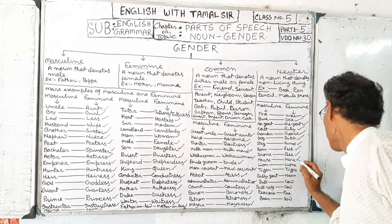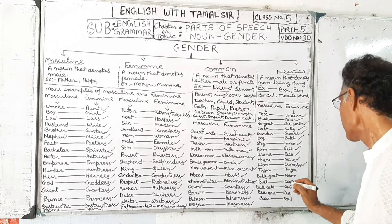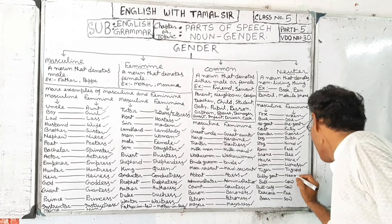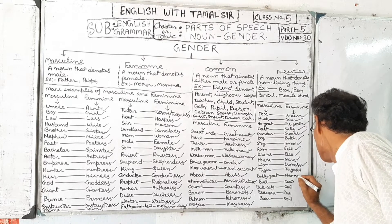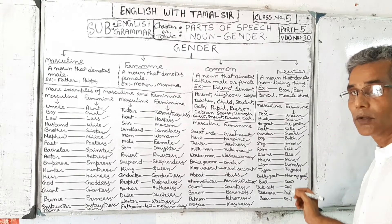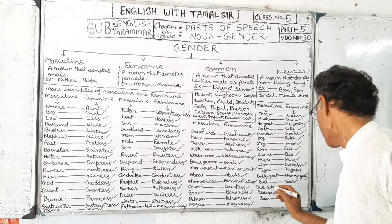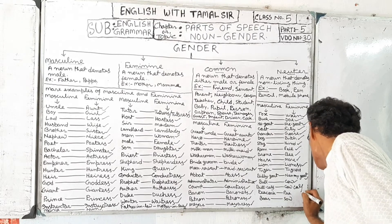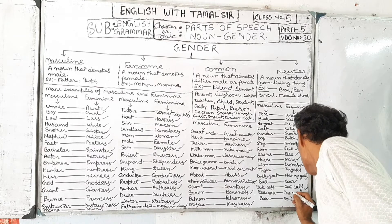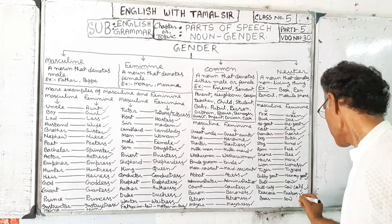More animal gender pairs: lion / lioness, tiger / tigress, billy goat / nanny goat, bull / cow, bull calf / cow calf, peacock / peahen, and bull / sow.